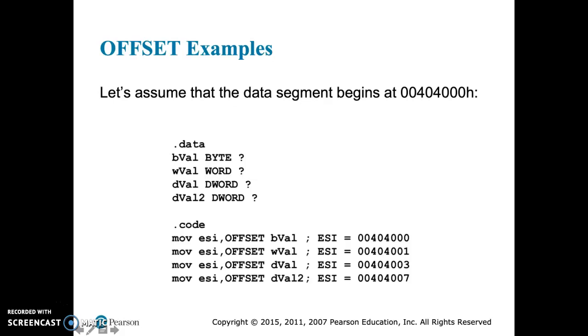Here's a few examples. We've got, in our data segment, we have four labels. We've got a BYTE, a WORD, byte is 8-bit, word is 16-bit, and DWORD is 32-bit.